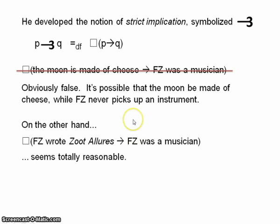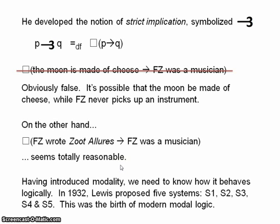Now, there are many questions to be asked about strict implication, and it's very controversial whether it does the job that Lewis wanted it to do. But all that's relevant here is that Lewis developed this idea of strict implication, and in doing so, he had to invoke the notion of modality, because you're dealing now with necessity and possibility and those ideas. And having introduced the notion of modality, we need to understand how it behaves logically.